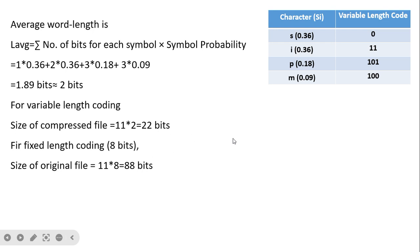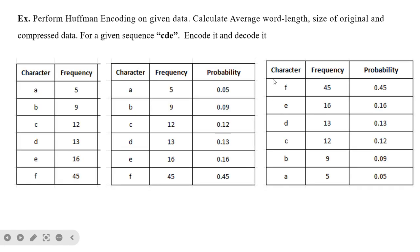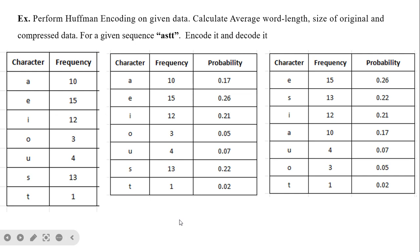Encoding and decoding for this example works the same way as the previous two. Note that spaces shown are for simplicity — actual transmitted data is continuous. Additional practice problems are provided: the character probabilities are arranged in descending order; students should draw the Huffman tree, find the number of bits per character, calculate the average word length, and perform encoding and decoding for the sequence CDE. Partial solutions are given to guide you.